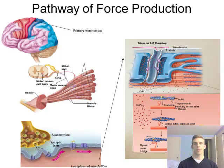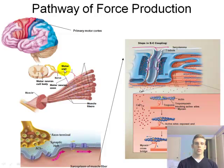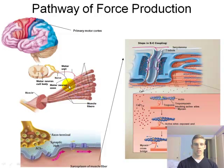The pathway of force production starts at the primary motor cortex, where a signal and action potential travel down the spinal cord and then down a motor neuron. A motor neuron is simply a neuron that innervates a muscle fiber. A motor unit — an important definition — is an alpha motor neuron and all the fibers it innervates. As shown in the diagram, an alpha motor neuron will go down and innervate multiple muscle fibers; in this example the motor unit has two fibers.